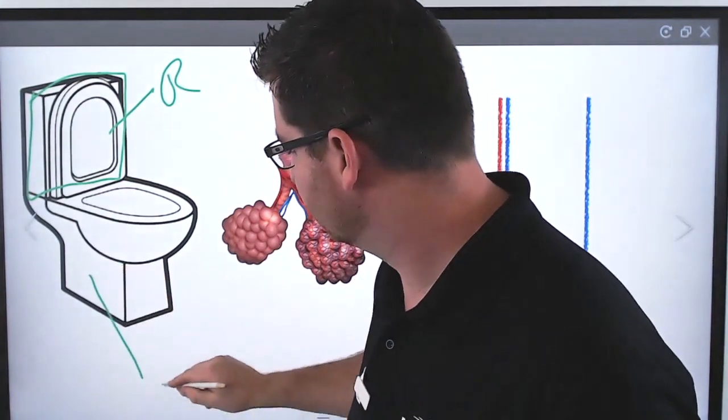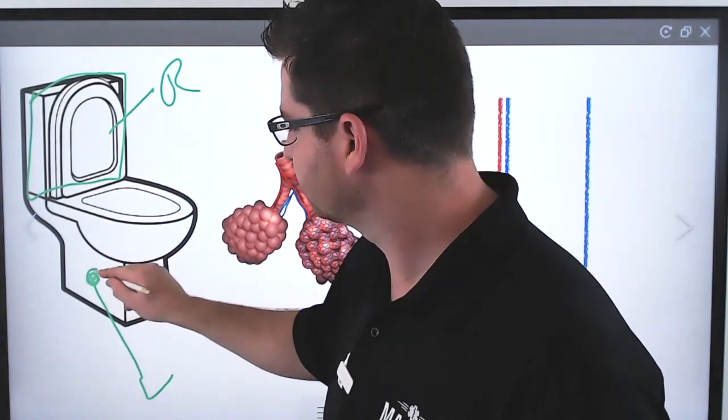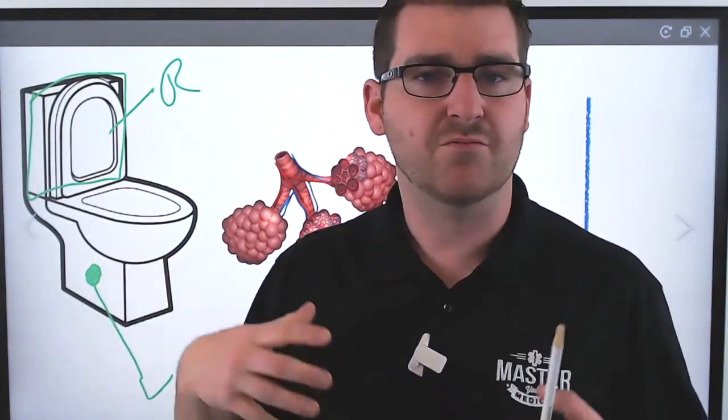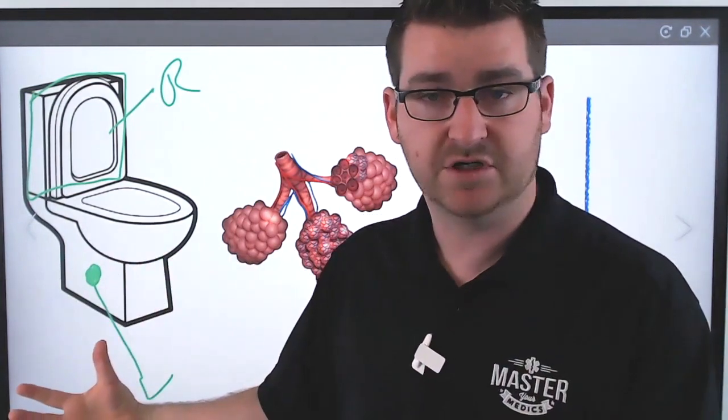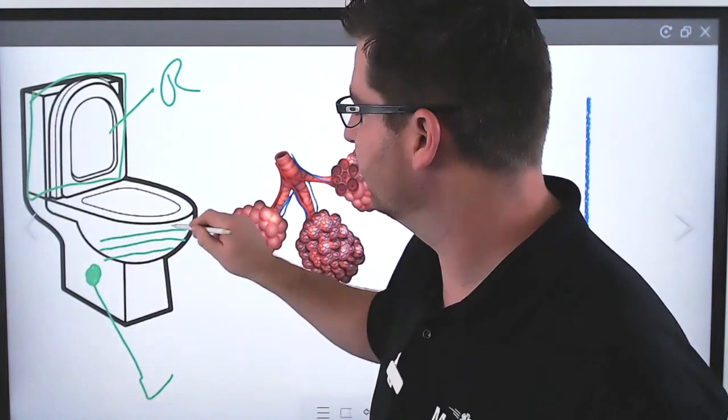The left side of your heart is that plumbing down here. When the left side of the heart stops working very well, and it forms more of a clog there, per se, that means that the toilet bowl, which would represent your alveoli and your lungs, starts to back up.